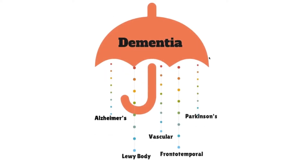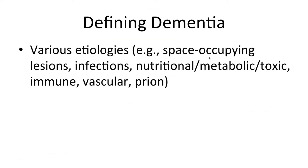Dementia is a broad term, but ubiquitous in our culture, and we often use it in our medical vocabulary. It is a broad umbrella term used to describe a variety of symptoms and decline in mental abilities that interfere with activities of daily living. It is a syndrome, not necessarily a disease. This is different from, say, Alzheimer's disease or Parkinson's disease.